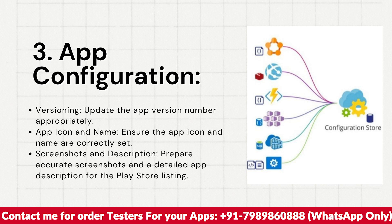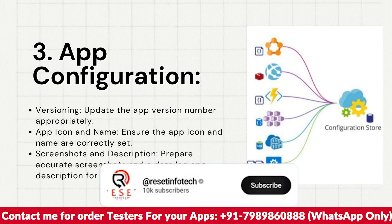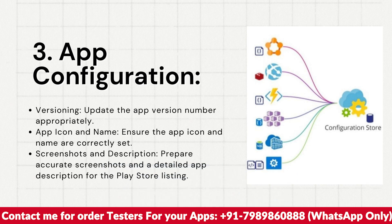Also, ensure the app icon and name are correctly set. Don't use a logo from a different app or mismatch the name — for example, using an action logo but naming it a 'basic calculator app.' Make sure the logo and name match the app you are publishing. A mismatch can cause your app to get rejected during review.